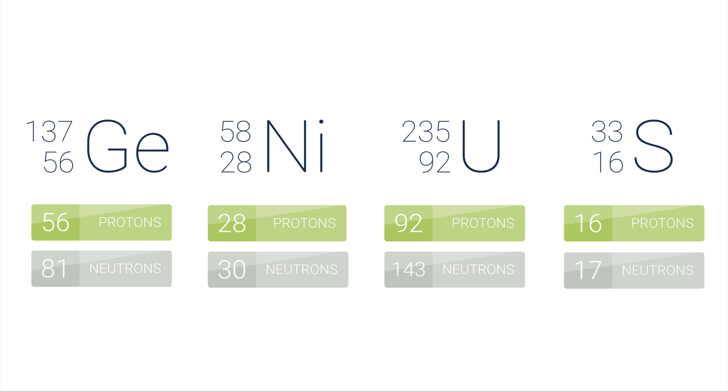And so for barium, there's 56 protons in every barium isotope. But in this particular barium isotope, barium-137, I have to subtract 56 protons away from that 137 number, and that gives me 81, which is my number of neutrons. Repeat that same process for nickel-58, uranium-235, and sulfur-33, and you'll get 30, 143, and 17 neutrons.